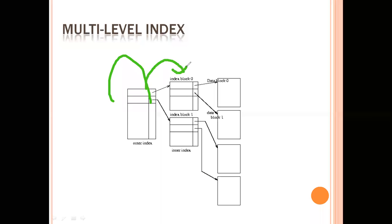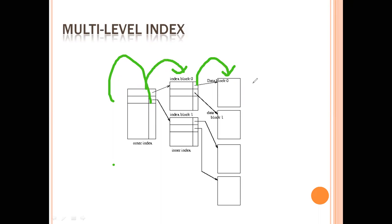Then there is multi-level index, which means we maintain more than one level of index records. The outer index points to some inner index, and the inner index has blocks where the actual data references are stored. This means we are not keeping the data reference directly in the outer index. The outer index points to inner index blocks — such as block zero, block one — and those inner blocks point to the actual data.